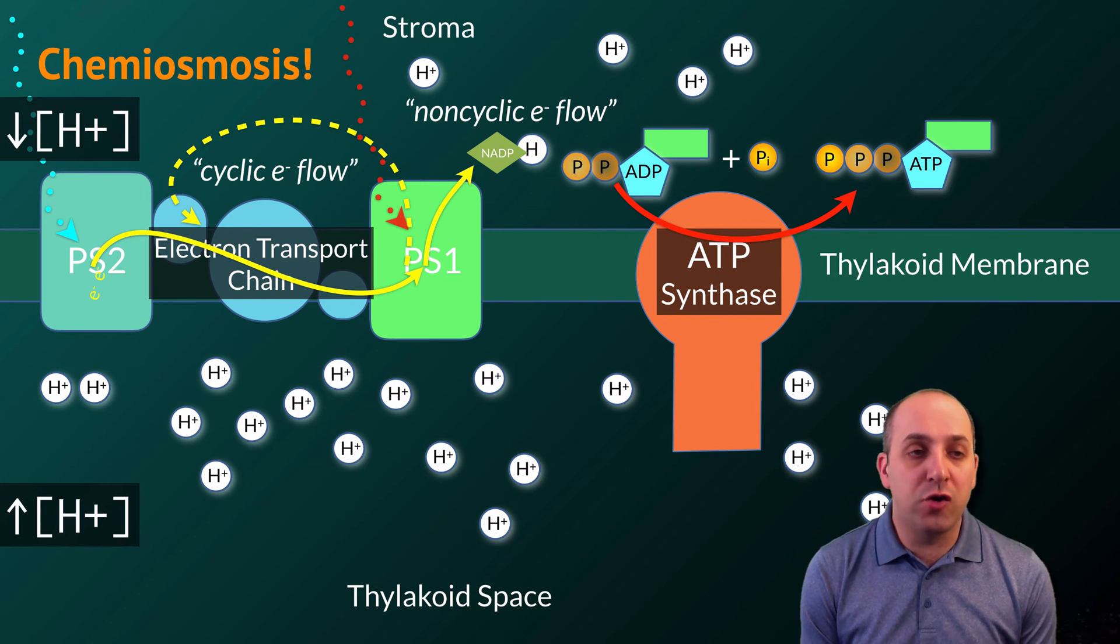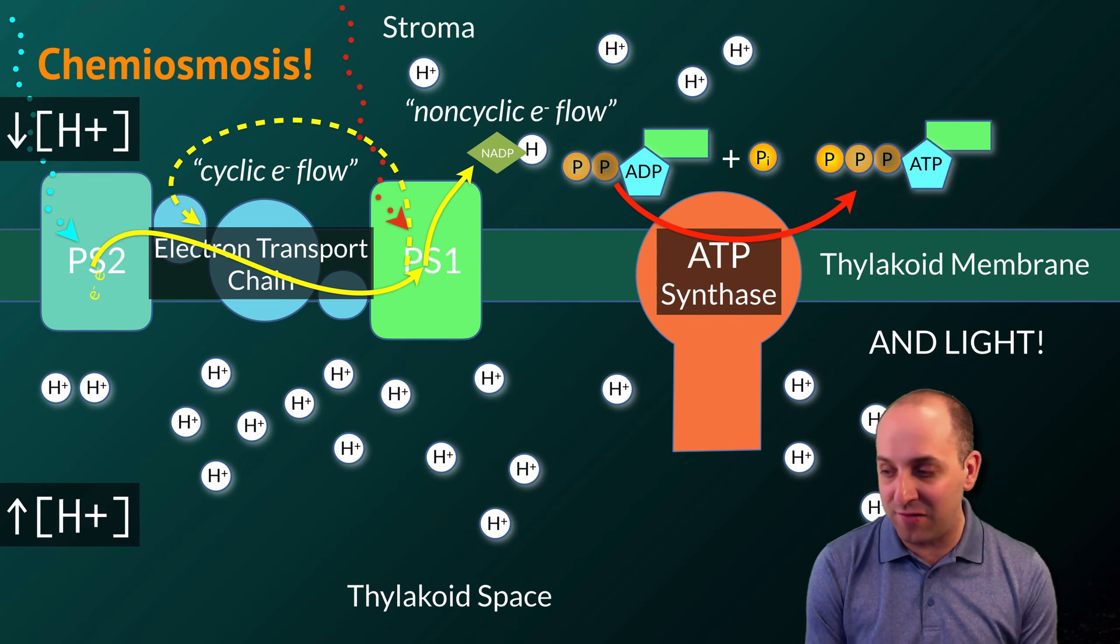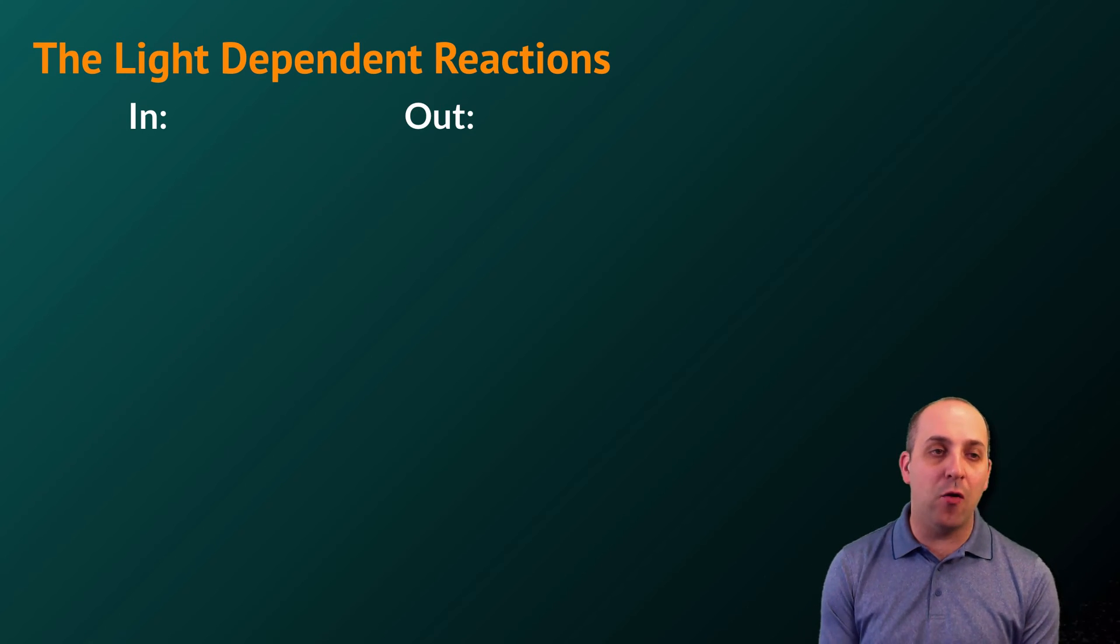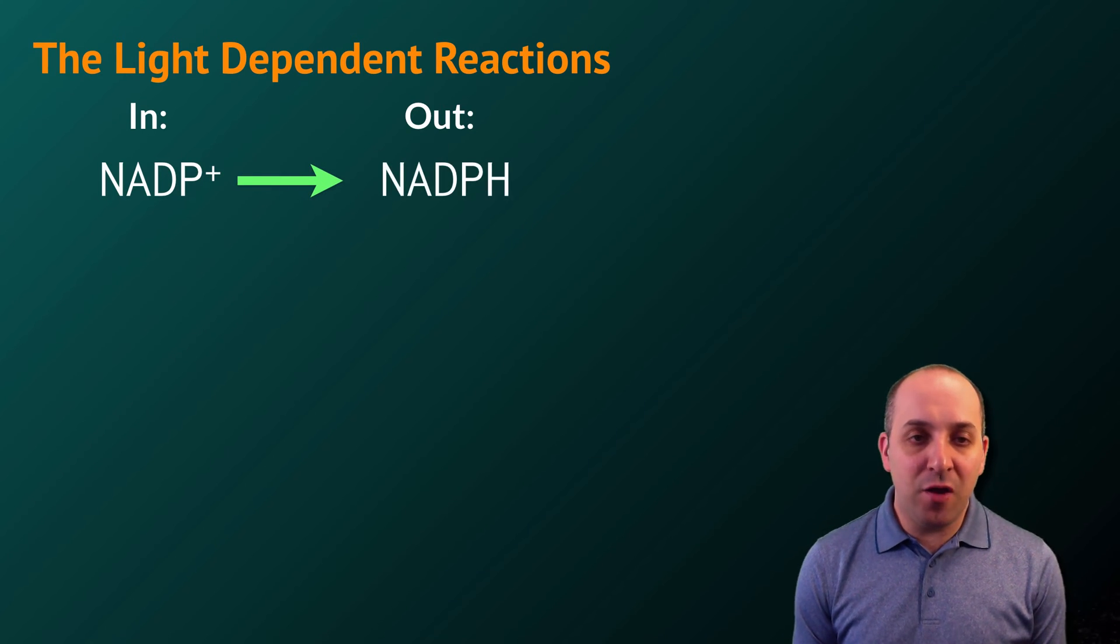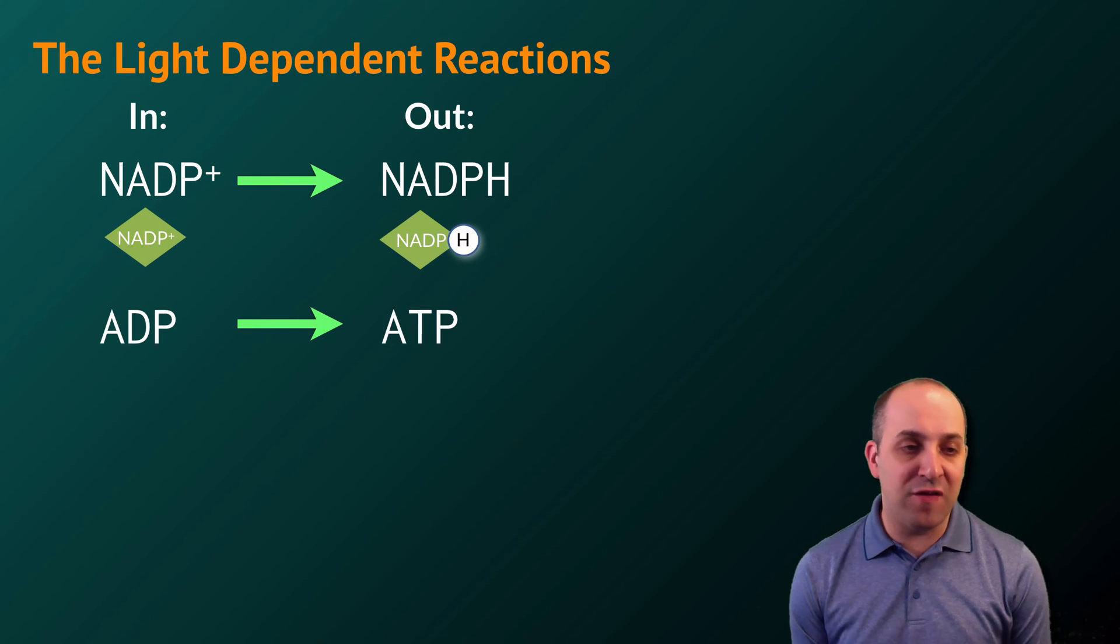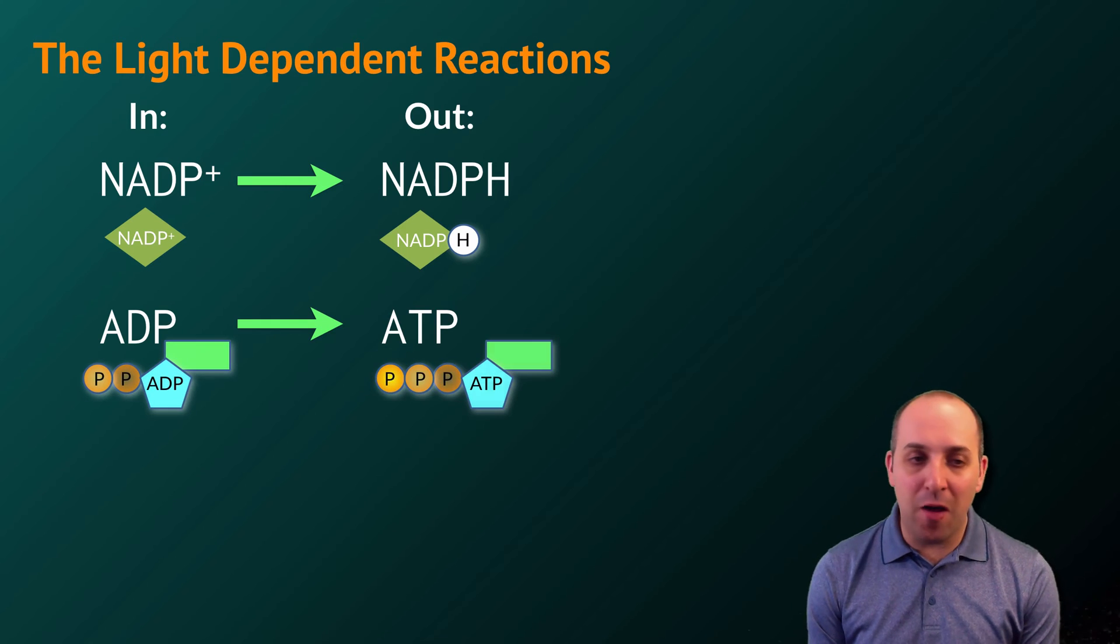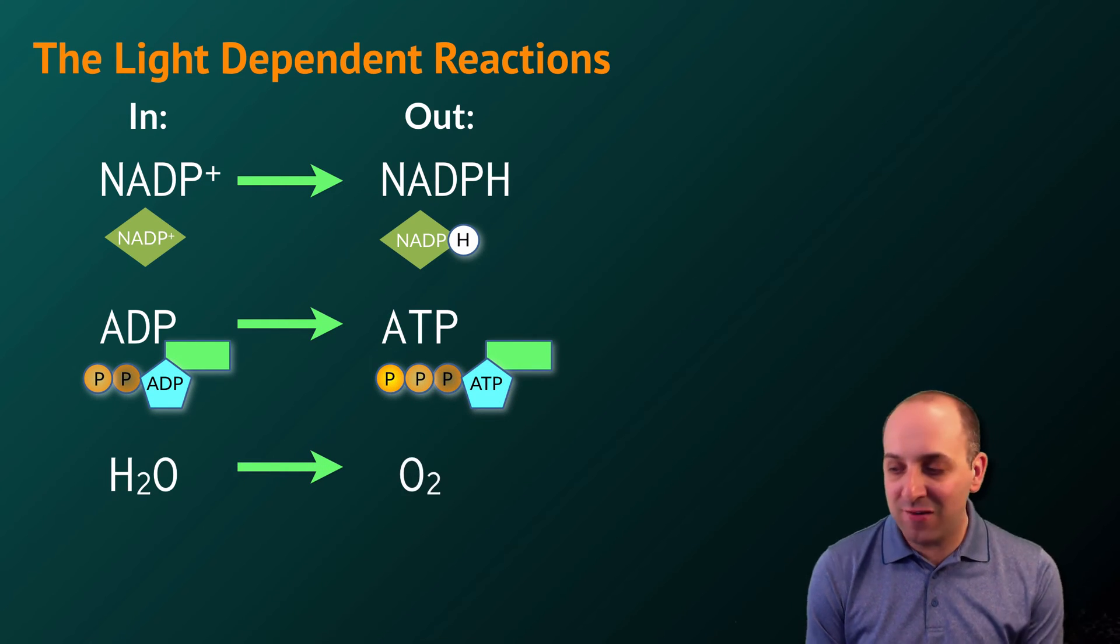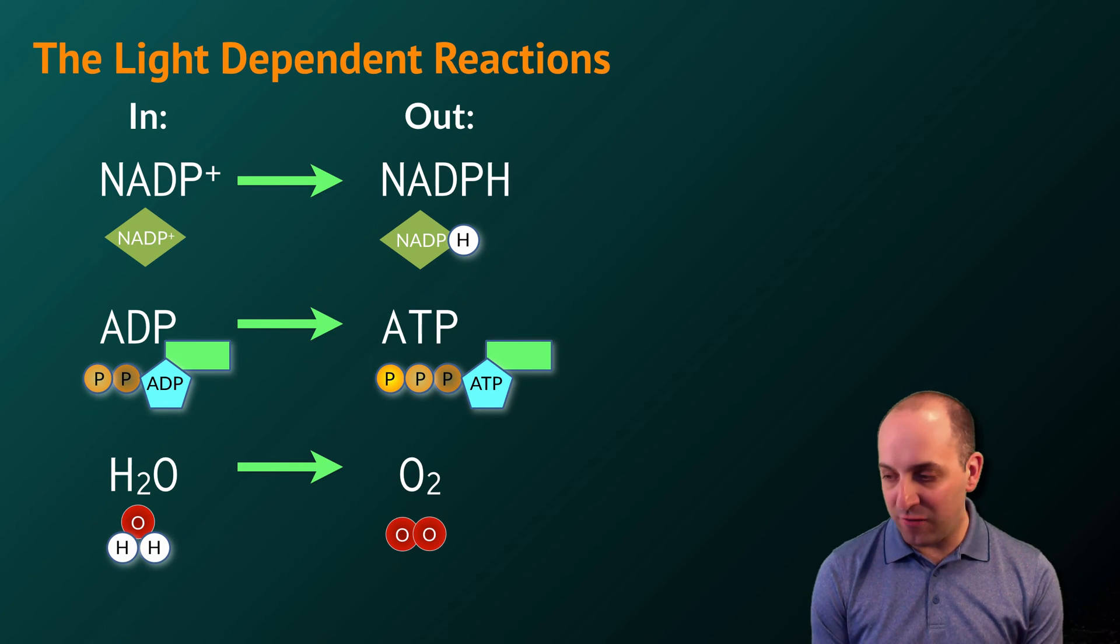As long as photoautotrophs have carbon dioxide and water, they can continue to carry out the process of photosynthesis. When looking at the light-dependent reactions, let's pay attention to what went in and what came out. We've put in molecules of NADP plus and we get out molecules of NADPH. We've also put in molecules of ADP and have gotten out molecules of ATP as a result. Water was also converted into oxygen, which left the cell as waste.